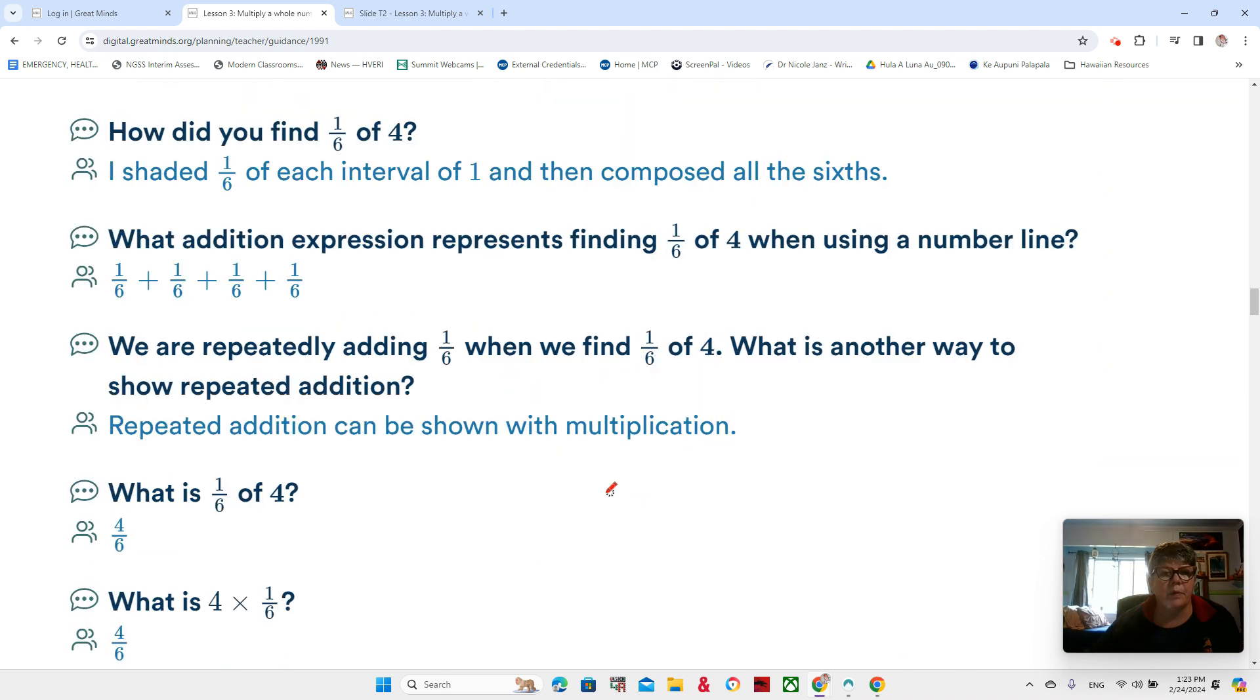One-sixth plus one-sixth plus one-sixth plus one-sixth is four-sixths, but we can also multiply four times one-sixth, and it will also be four-sixths. There's two ways to do it: repeated addition or multiplication.